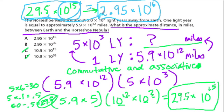We're just rewriting this so it's in scientific notation. So I would pick choice A, 2.95 × 10¹⁶. Alright, hope that helped.